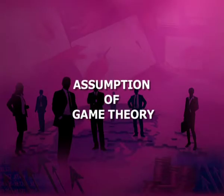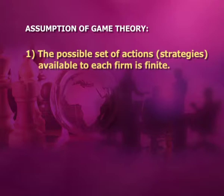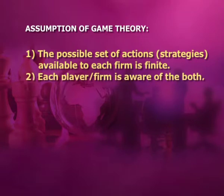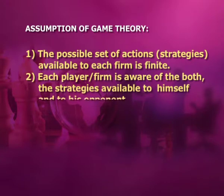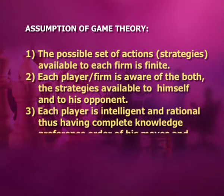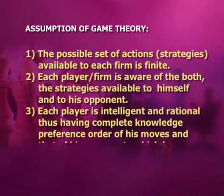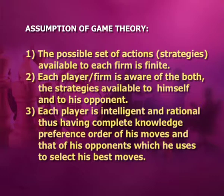The assumptions of game theory are: first, the possible set of actions or strategies available to each firm is finite. Second, each player or firm is aware of both the strategies available to himself and to his opponent. Third, each player is intelligent and rational, thus having complete knowledge of the preference order of his moves and that of his opponents, which he uses to select his best moves.